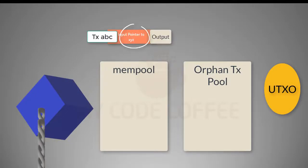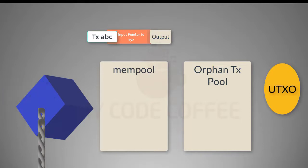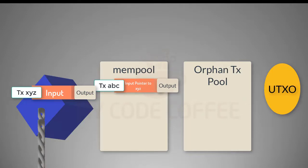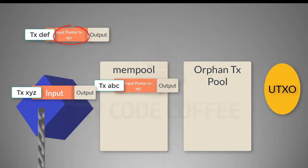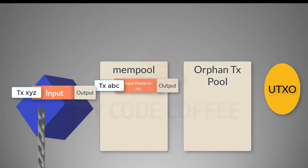Let's say a full blockchain node receives a transaction ABC whose input points to transaction XYZ. The node first searches for XYZ in the mempool, and if not found there, it searches the blockchain. If XYZ is present in the blockchain and the input of ABC points to an unspent output of XYZ, then ABC is valid and gets saved in the mempool. Now if another transaction DEF arrives pointing to the same transaction output as ABC, it will be rejected — two transaction inputs cannot point to the same transaction output — and it will not be propagated or saved anywhere.